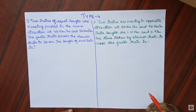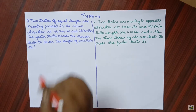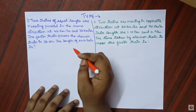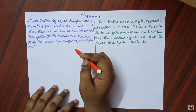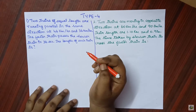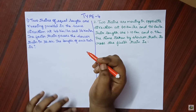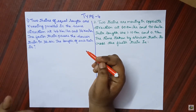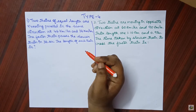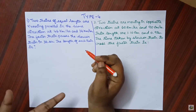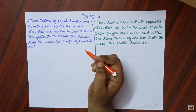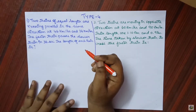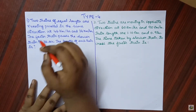Now let us move on to type 4. Here we are going to deal with when trains move opposite to each other, or when trains are moving in the same direction — how to calculate distance, speed, or time.